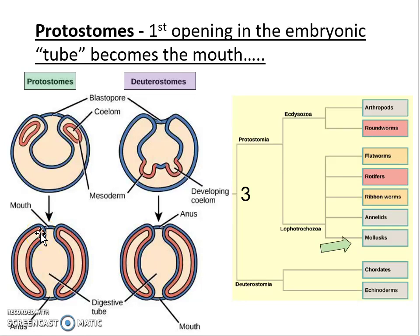We've worked our way through the evolution in the animal kingdom, and we're going to finish off the protostomes — organisms where during embryonic development the first tube that forms with the coelum has the mouth form first. We've seen some different examples of these interesting animals that we don't necessarily see because they're under our feet.